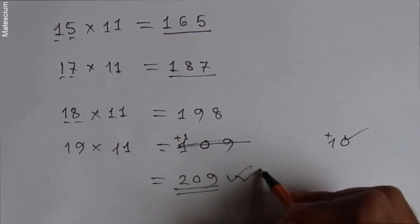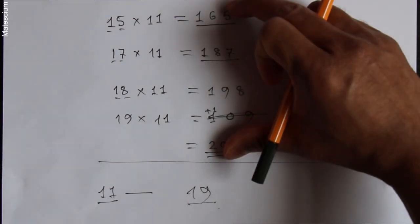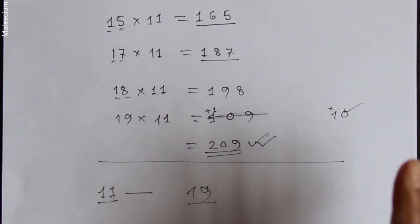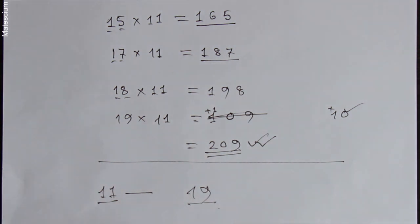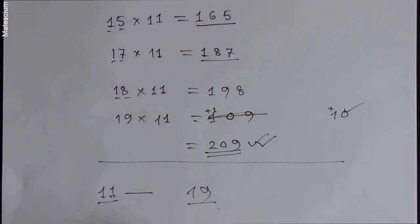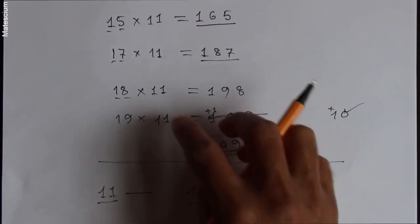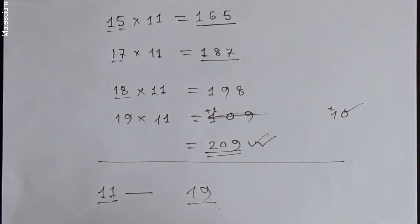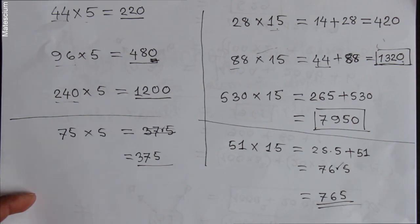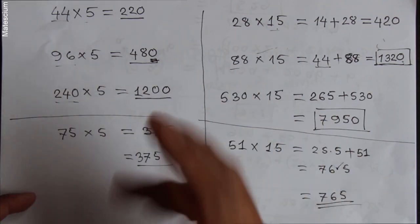This trick is only applicable for numbers between 11 and 19. That means you can multiply any number in this range by 11 using this trick.